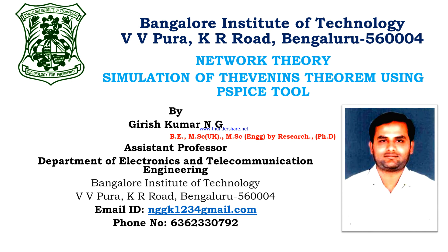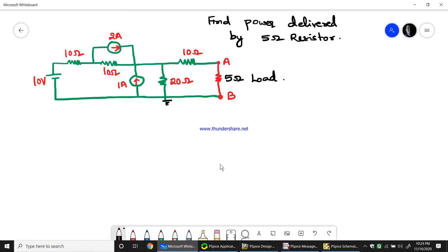Thevenin's theorem has a voltage source in series with a resistance, whereas Norton's theorem has a current source in parallel with a resistance. That is the only difference you need to keep in mind. So let us learn how to simulate Thevenin's theorem using the PSPICE tool.